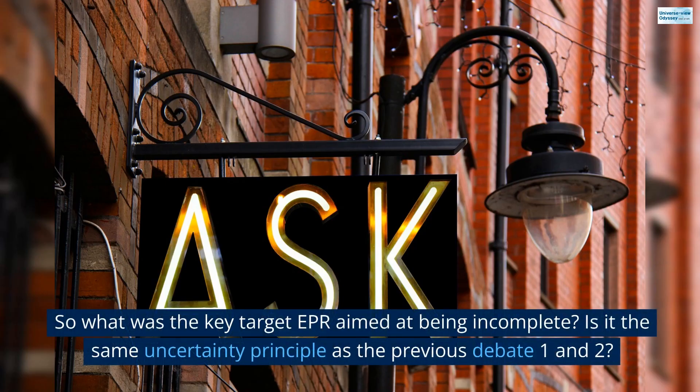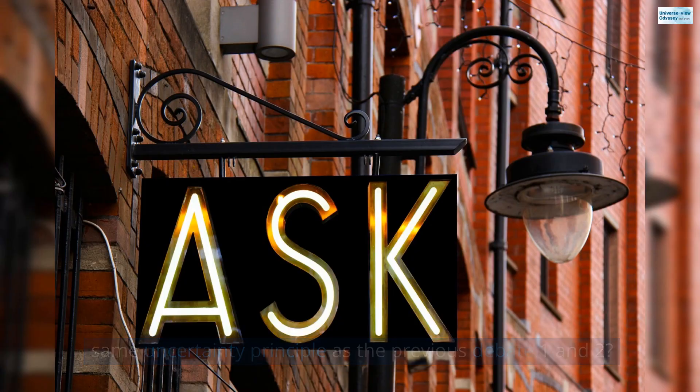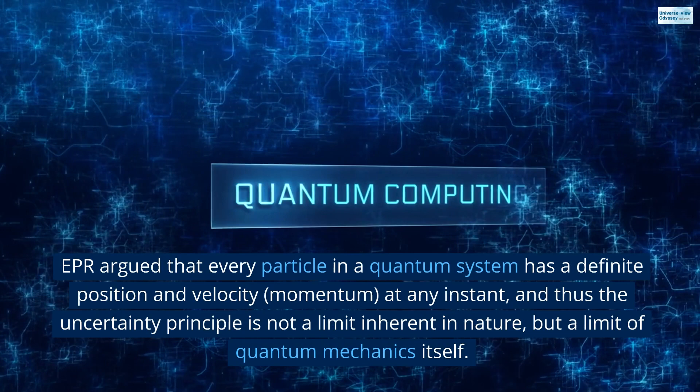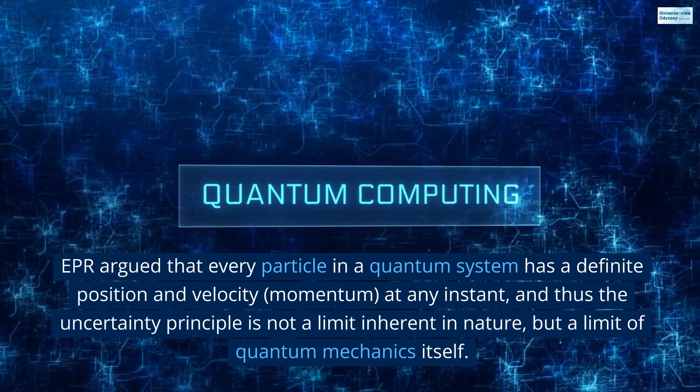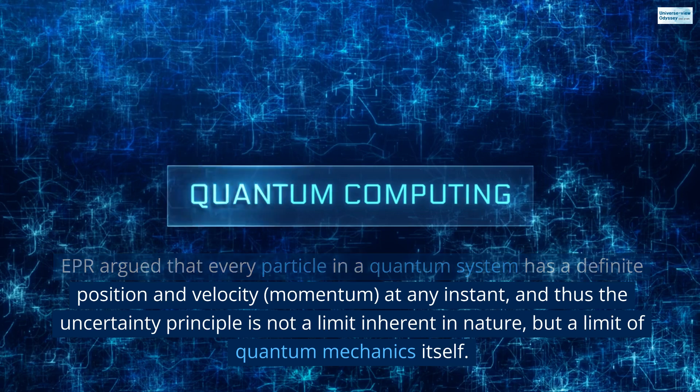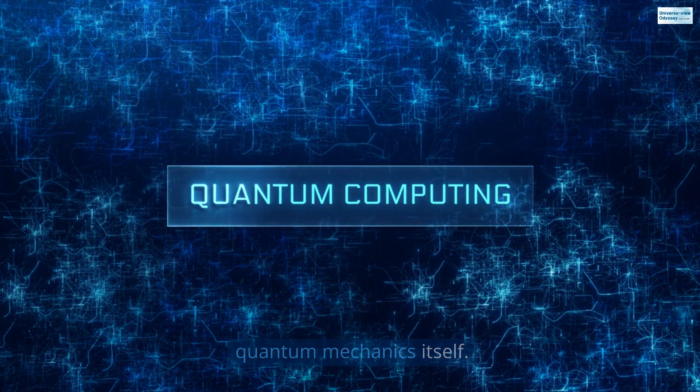So what was the key target EPR aimed at being incomplete? Is it the same uncertainty principle as the previous debate 1 and 2? You got it right. EPR argued that every particle in a quantum system has a definite position and velocity, momentum, at any instant, and thus the uncertainty principle is not a limit inherent in nature, but a limit of quantum mechanics itself.